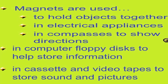In compasses, magnets are used to show direction — they can tell you where north, south, east, and west are. We also use magnets in electric appliances like your fan, AC, and fridge. In computer floppy disks, magnets help to store information. Flash drives also use magnetic principles for gathering and storing data.